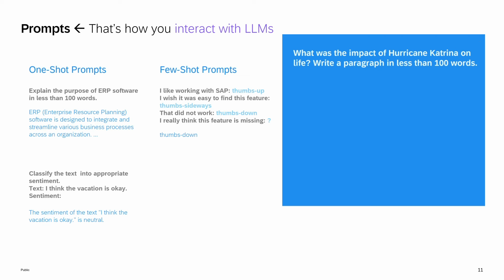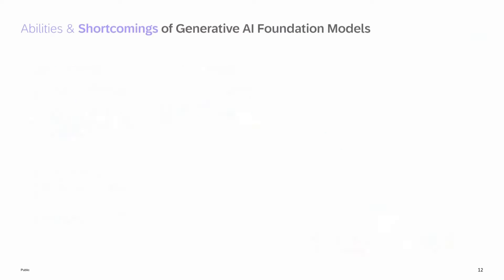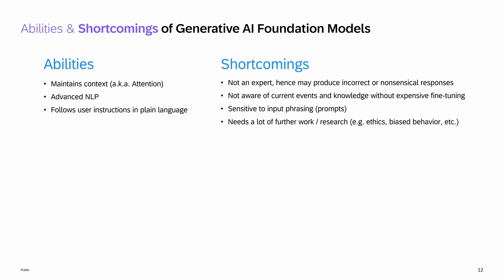So let's take this example: What was the impact of Hurricane Katrina on life? If you ask this to an LLM, you get a pretty good response. The question we should really be asking is: is this a good enough response? As an enterprise, would you trust it? Is this a trustable response? To answer that, we have to go a little bit behind the scenes of LLMs and look at it critically as architects — at its abilities and shortcomings.